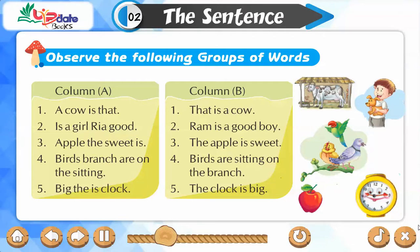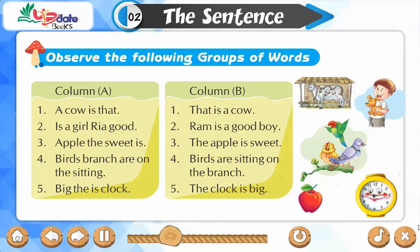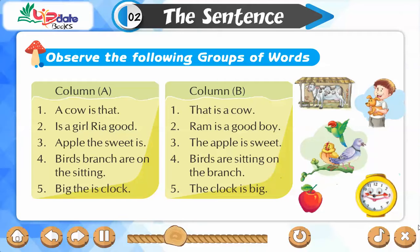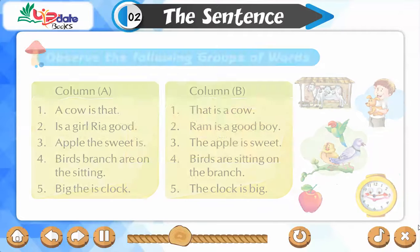Column A: 4. Birds branch are on the sitting. Column B: 4. Birds are sitting on the branch. Column A: 5. Big the is clock. Column B: 5. The clock is big.